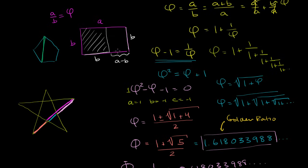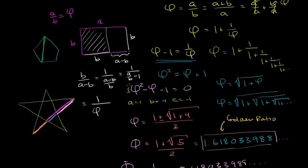Wouldn't it be cool if this remaining rectangle also has the golden ratio? Let's find the ratio of b to a minus b. That's equal to 1 over the ratio of a minus b to b, which is 1 over a over b minus 1, and that's just 1 over phi minus 1. But phi minus 1 is 1 over phi — so this is 1 over 1 over phi, which is just phi again. So the ratio of the smaller rectangle's height to its width is once again the golden ratio.